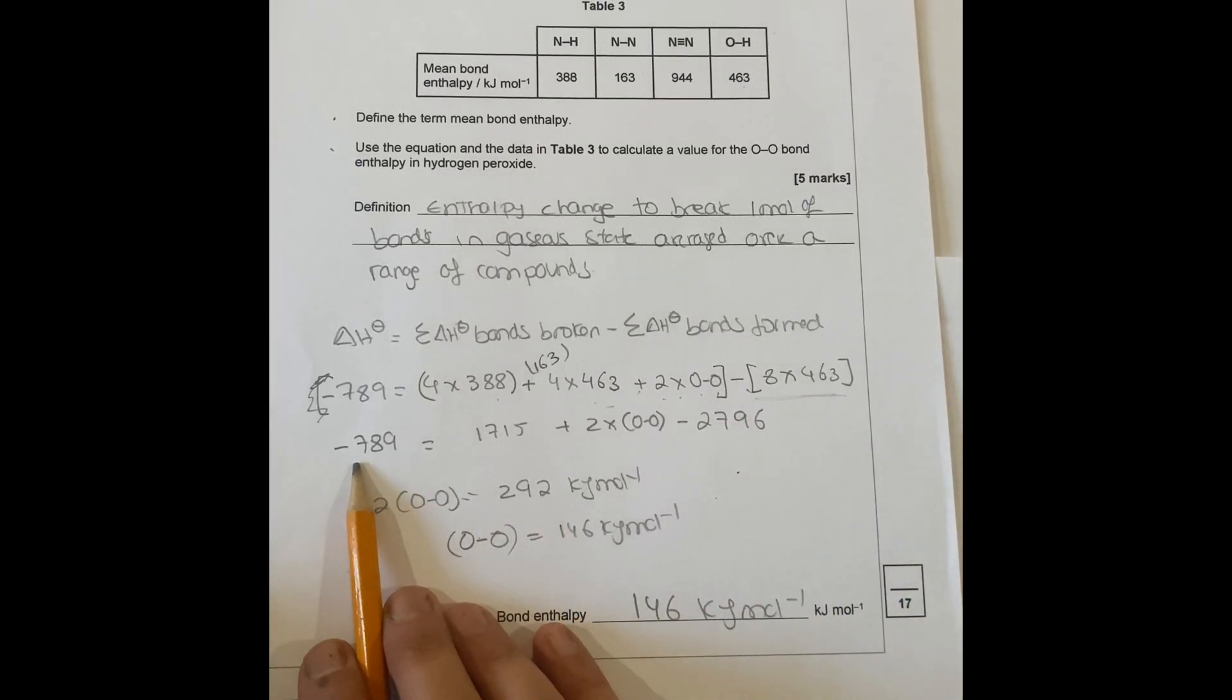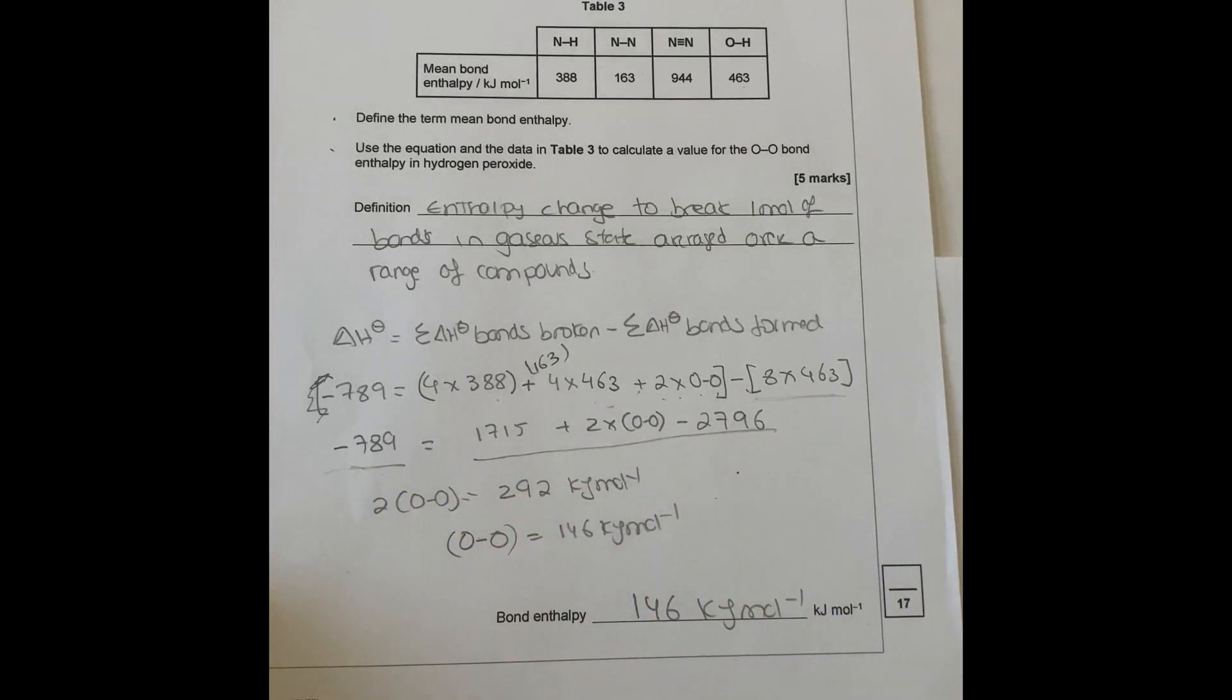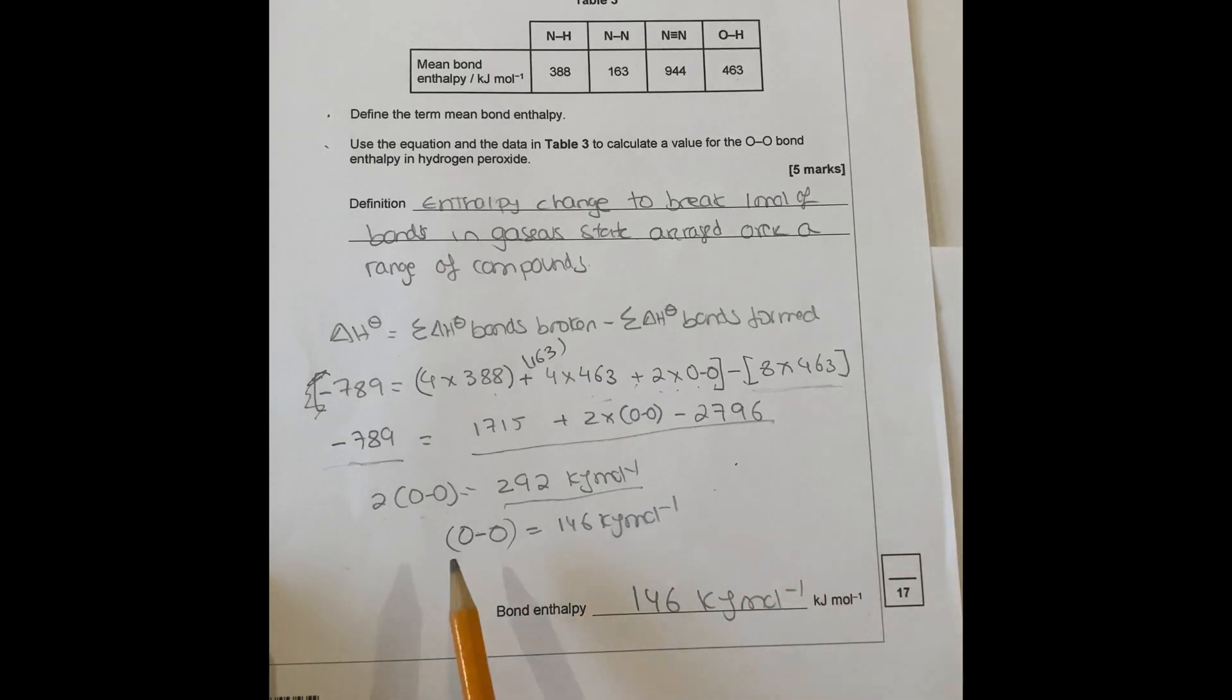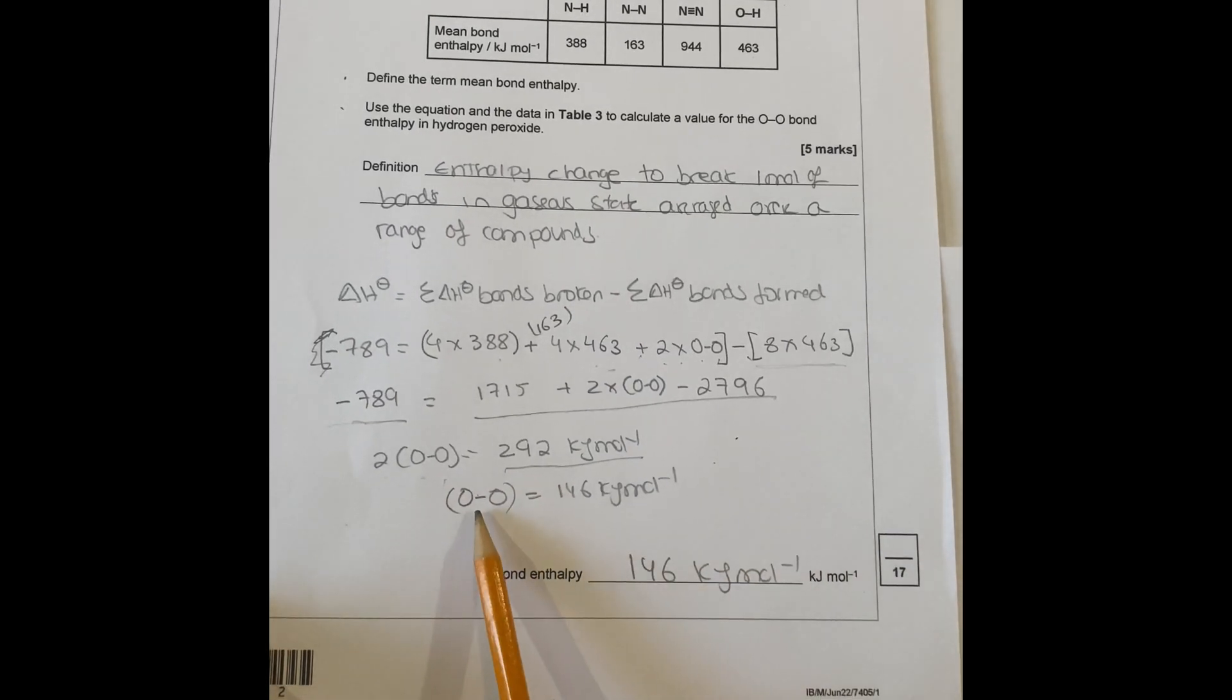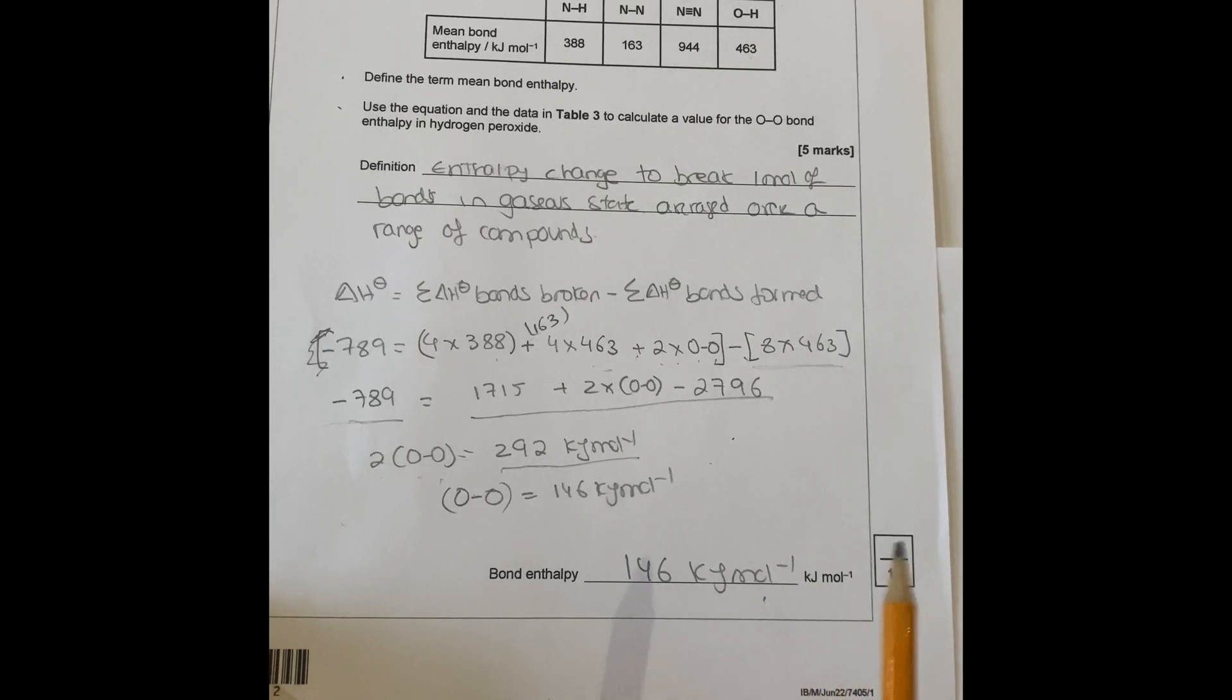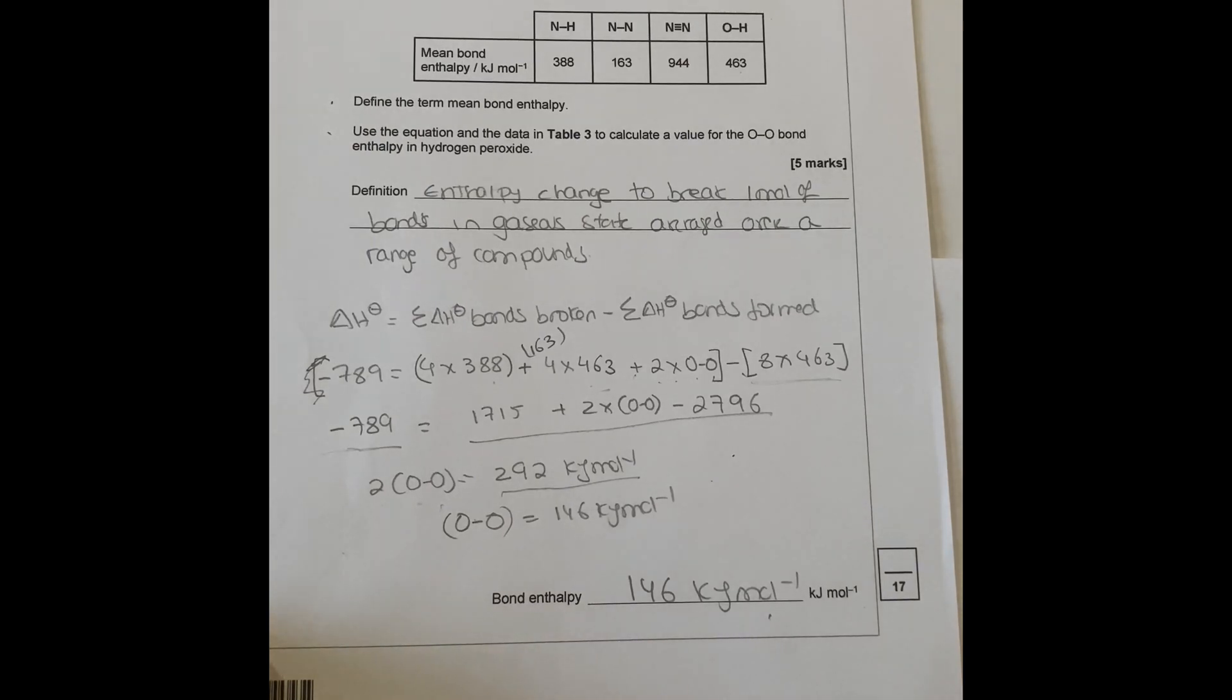The grand total is you replace those values in here, then you rearrange to find two O-O, which gives you 292. Then at the end you divide this by two because you want to know what is the mean bond enthalpy of O-O, which gives you 146. So that's the answer, 146 kilojoules per mole. I hope you understood that, thank you.